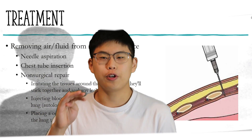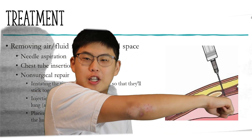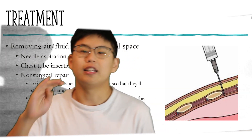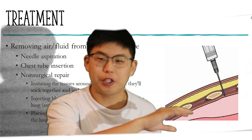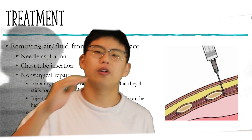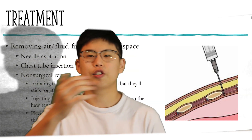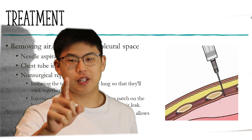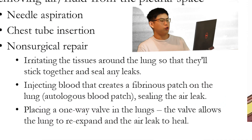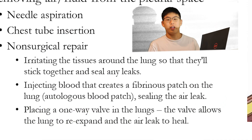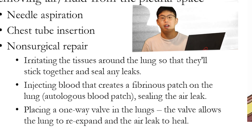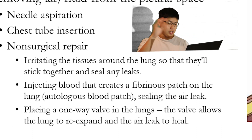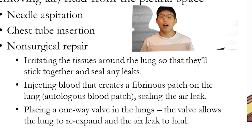The most common treatment for pneumothorax is needle aspiration or chest tube insertion. Both treatments involve poking through the chest wall to suck out the offending air or fluid to help relieve compression on the lungs and seal the air leak, allowing the lung to re-expand. Alternative treatments include irritating the tissues around the lungs to cause them to stick together, injecting blood to create an autologous blood patch to seal the leak, or placing a one-way valve in the lungs via a bronchoscope to help the lung re-inflate on its own.